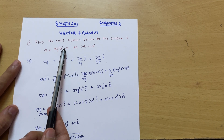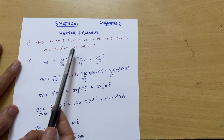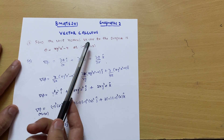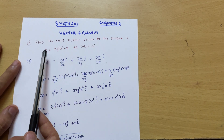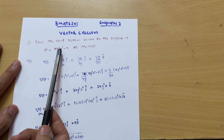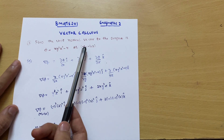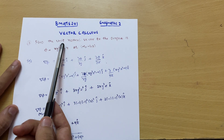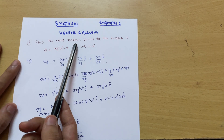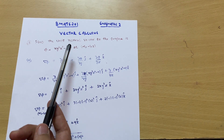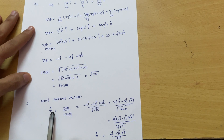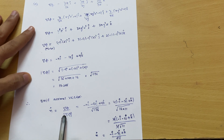We were supposed to calculate the grad phi of the surface. In this problem we have to calculate a new quantity — the unit normal vector to the surface — where phi is given as x y³ z² minus 4, at the point (-1, -1, 2). These are the points at which we have to calculate the unit normal vector. The formula for unit normal vector is: n-vector equals del phi upon mod of del phi.